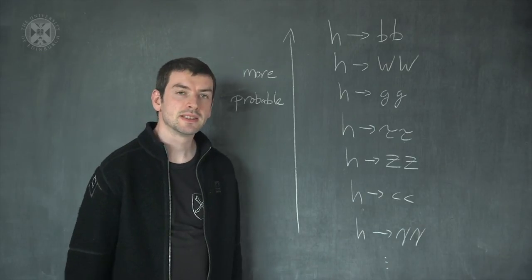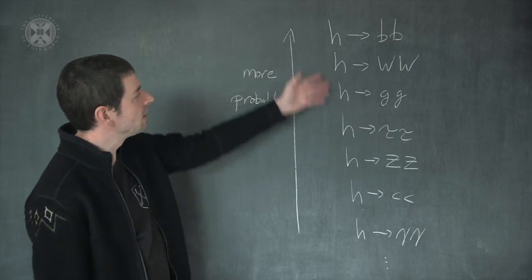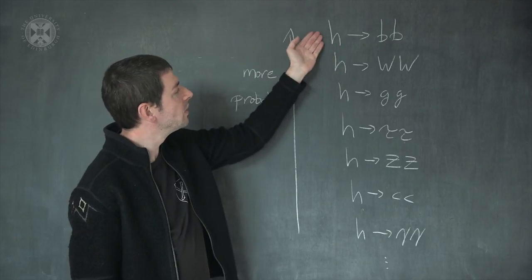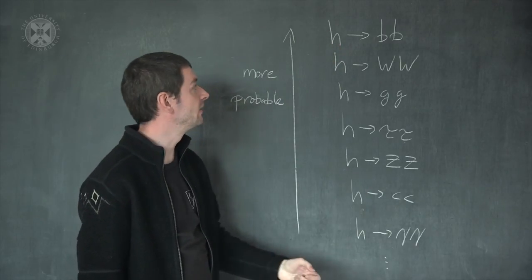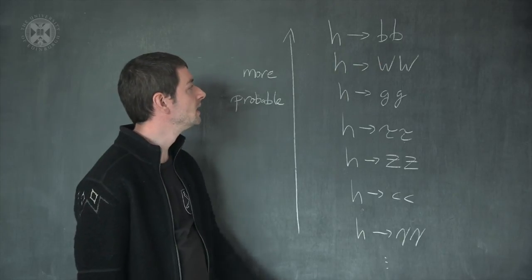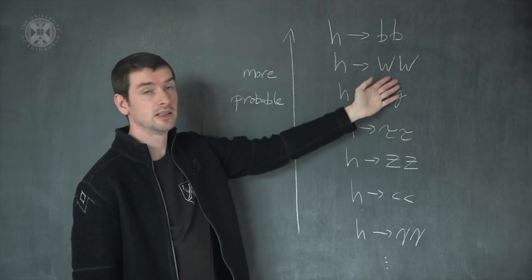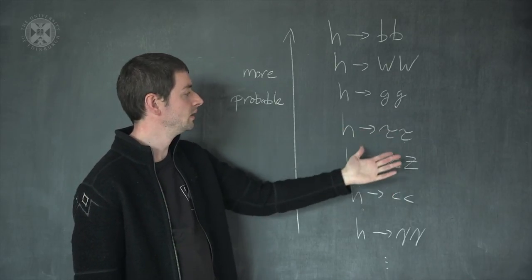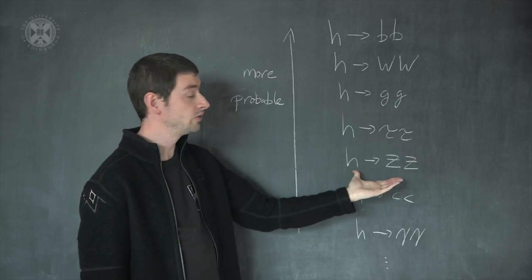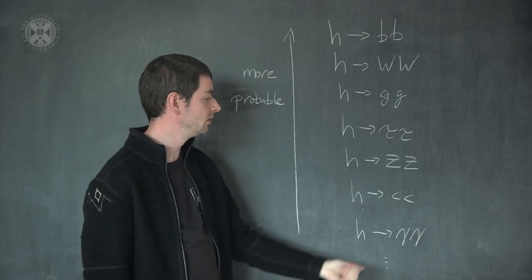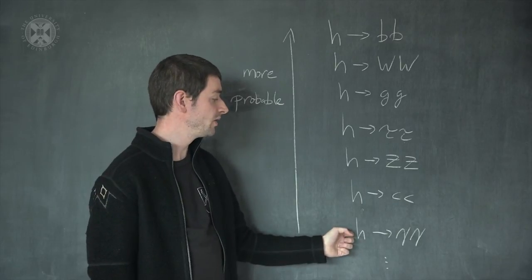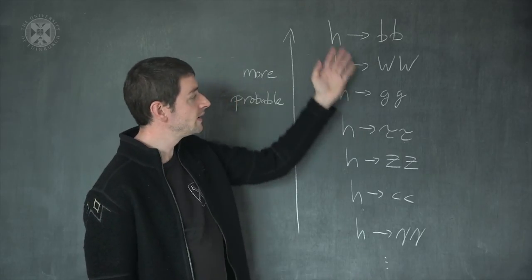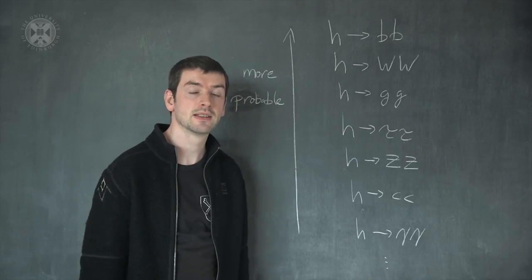Similarly, we consider the decay of the Higgs to two Z bosons. Since the mass of the Z is a little larger than the mass of the W, this process is a little bit more disfavored. In addition, since there are two W's but only one Z, this process is always at least half as important as the process with Higgs decaying to two W's. So let's put it together and see which decays are most important. The most probable decay of the Higgs boson is to two B quarks. The next most probable decay is to two W's. After that, the Higgs can decay to gluons, to tauons, to two Z bosons, to two charm quarks, and to two photons.